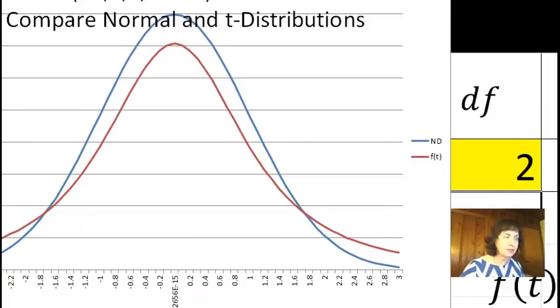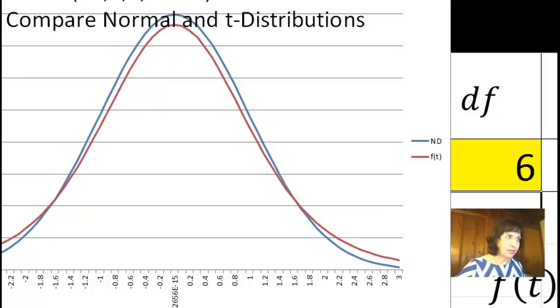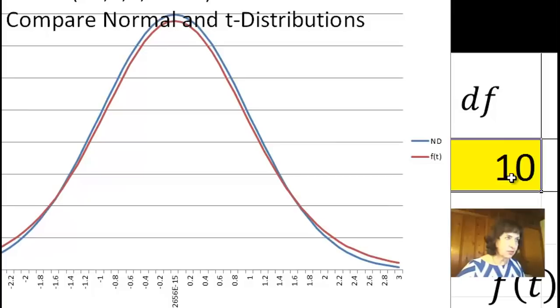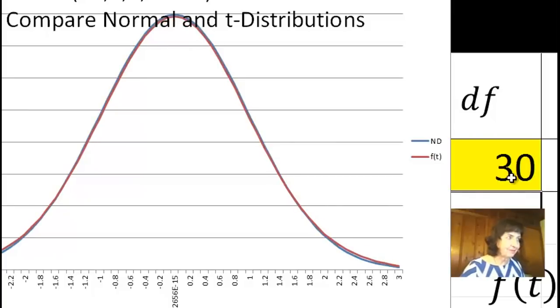Degree of freedom 2 is almost binomial distribution. Then, let's make it 6, for example, and it's become more close distribution, 10. Very, very close. And finally, 30. You see, you cannot see the difference.